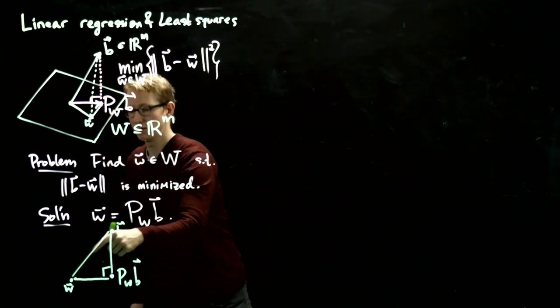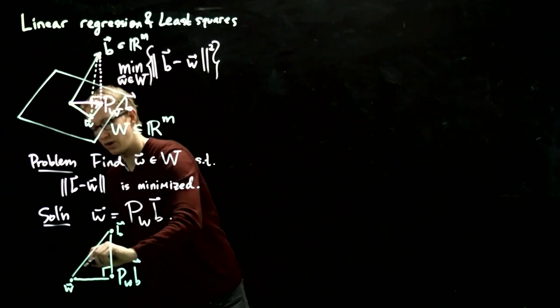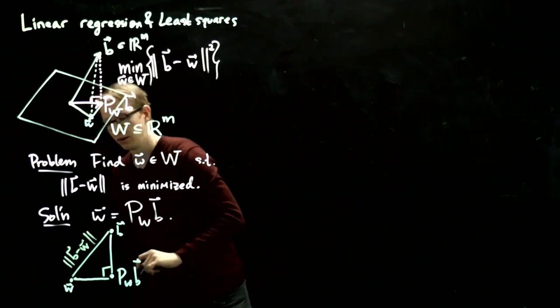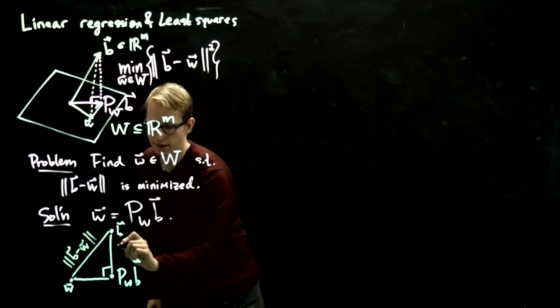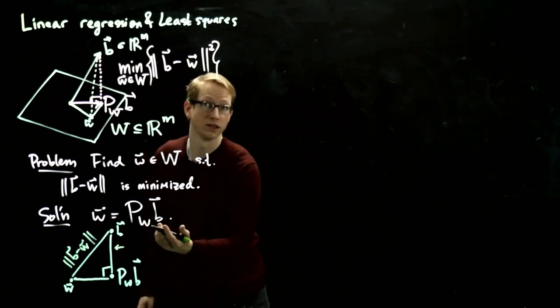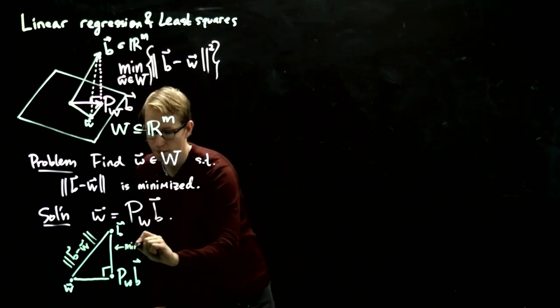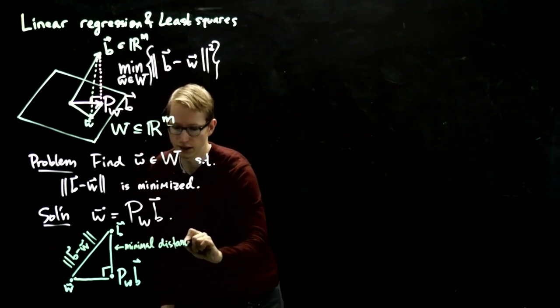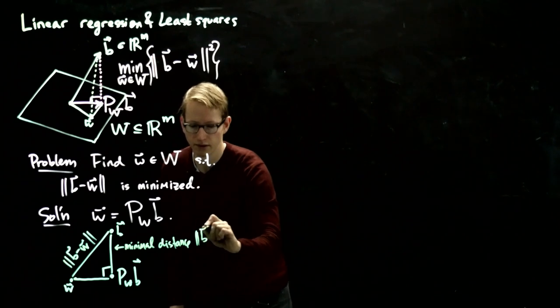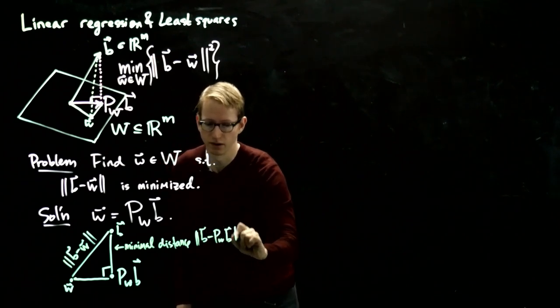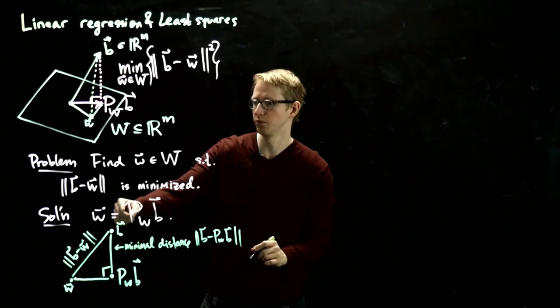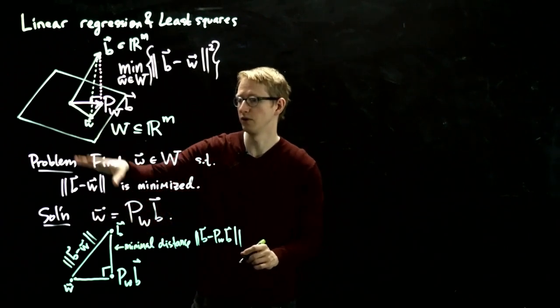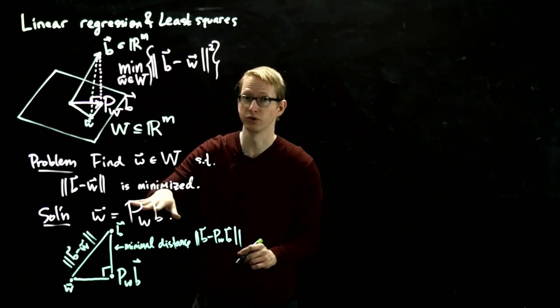Here, this is the hypotenuse of this triangle, and it's the distance from b to w, and this distance is the minimizing distance, supposedly. So that's just ||b - P_W(b)||. So I misused a little bit of notation here. I hope you understand that this w now is different from this one. This is the actual solution.